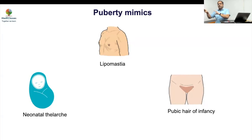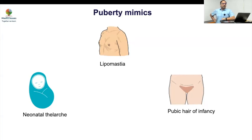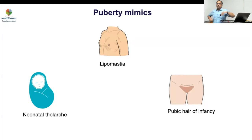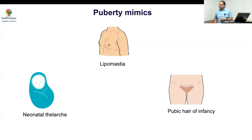Other important differentials for pubic hair of infancy include congenital hypothyroidism and adrenal tumor. At one year of age with pubarche, be concerned about congenital hypothyroidism and adrenal tumor — look for Cushingoid features and hypertrichosis. For isolated pubic hair of infancy without these features, follow up is generally sufficient without extensive workup.